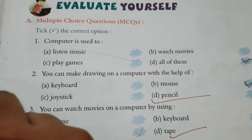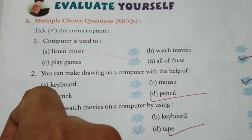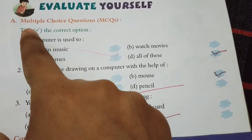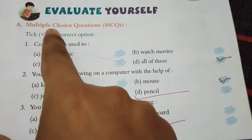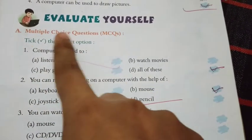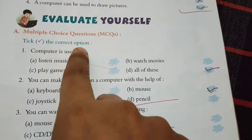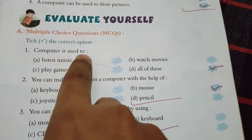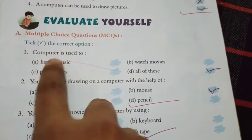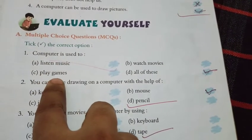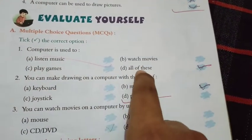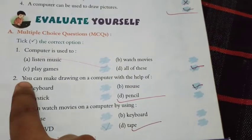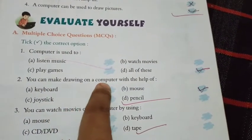Hello students, how are you? Class first, chapter second, multiple choice questions - tick the correct option. Number one: a computer is used to listen to music, play games, watch movies, or all of these. You can make a drawing on a computer...